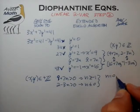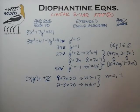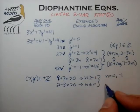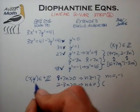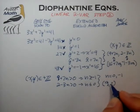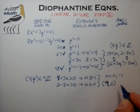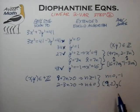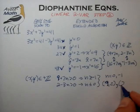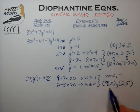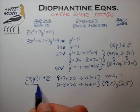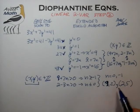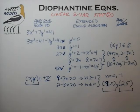Those values are n = 0 and n = −1. Plugging n = 0 into our equations gives x = 9, y = 2. Plugging n = −1 gives x = 2, y = 5. These are the only solutions where both x and y are positive, which is often the requirement we're looking for in contest problems.